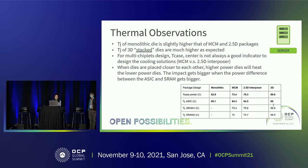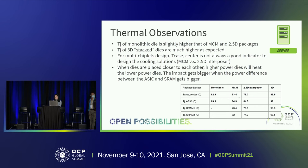Also, the junction temperature of the 3D stacked package is much higher than the other package options. The reason is that for 3D stacked, heat transfer passes a longer path vertically compared with the 2.5D or planar design. For multiple chip designs, the TJ center is not always a good indicator for designing cooling solutions. For example, in the MCM and 2.5D interposer designs, the junction temperatures from the ASIC and SRAM are pretty similar, but the case temperature has about a 5 degrees C difference. So using TJ center as a temperature limit without considering the package design options is probably not a good choice.